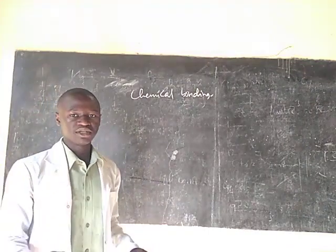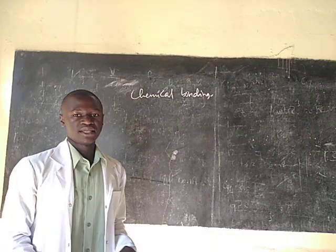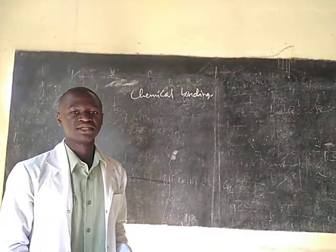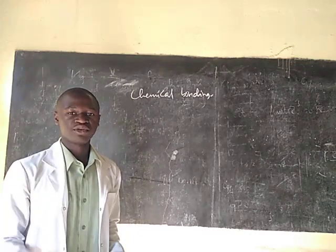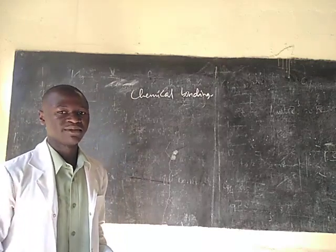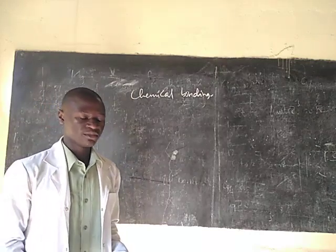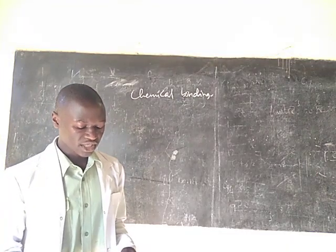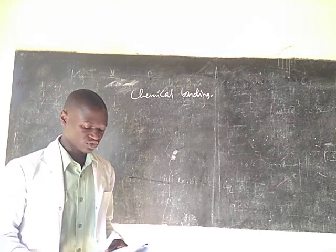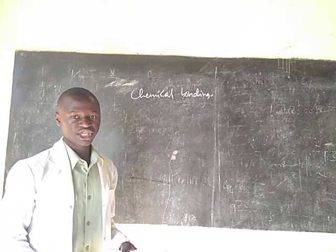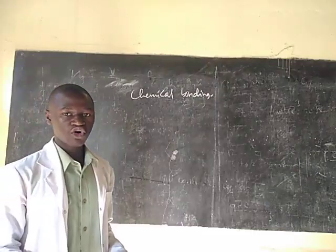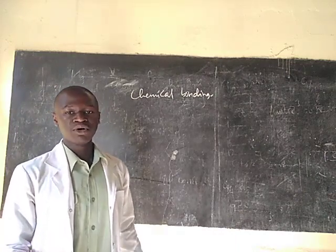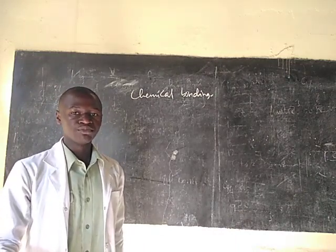By definition, the notes which I am using are in my Telegram group. I will put the link in the description and you can join the group and find these notes there in my Telegram group for general chemistry. By definition, chemical bonding is the chemical combination of two or more atoms to form a compound. As I told you, chemical bonding is just like putting a glue between atoms.